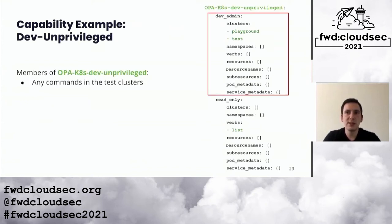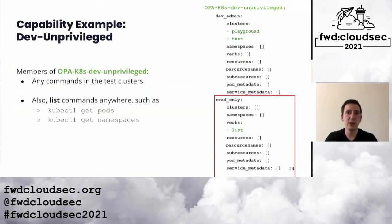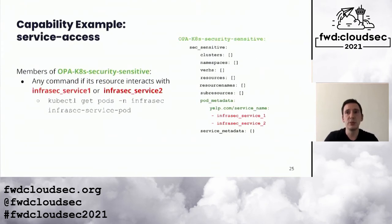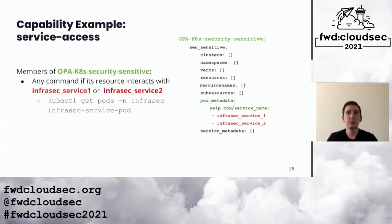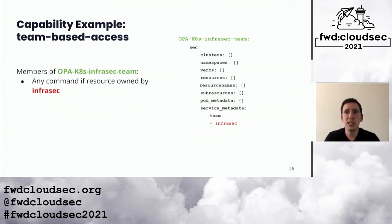Here's an example capability with two sub-capabilities. The first allows you to run any command as long as the cluster is one of two listed. You can also run the list command in any cluster. These two sub-capabilities combine to create an unprivileged capability. In this example we're using pod metadata to filter — `yelp.com/service-name` is a custom metadata attribute representing the name of the service a pod is part of. Here's another example using a team attribute to limit actions to only those where we can match the action to a service owned by the infrasec team.